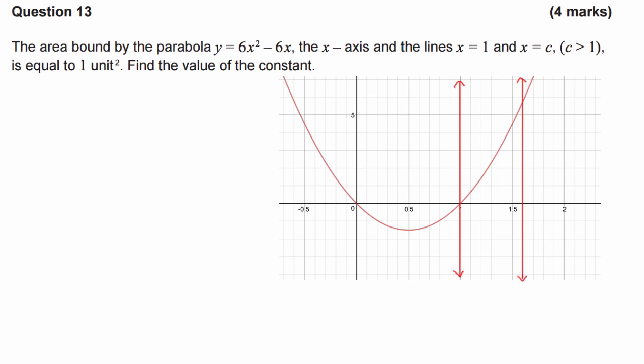And then we've got an area that's bound between that, the x-axis and these two lines. So, in this diagram, it's going to be that area there, that's equal to 1 unit squared. Now, what we've got to do is we've got to figure out what this value here is. We've got this x equals c value. So let's go about trying to do this.